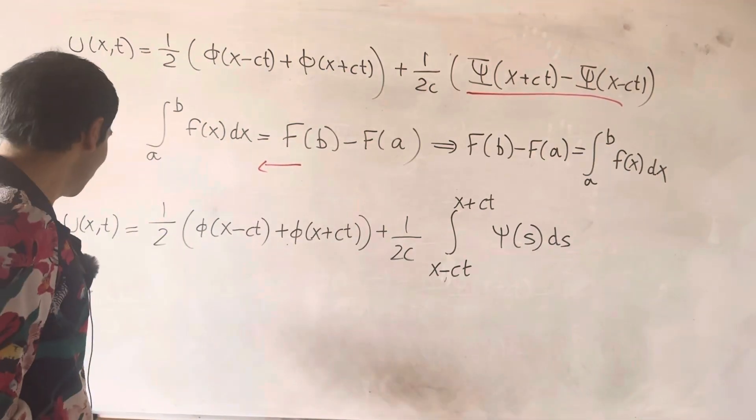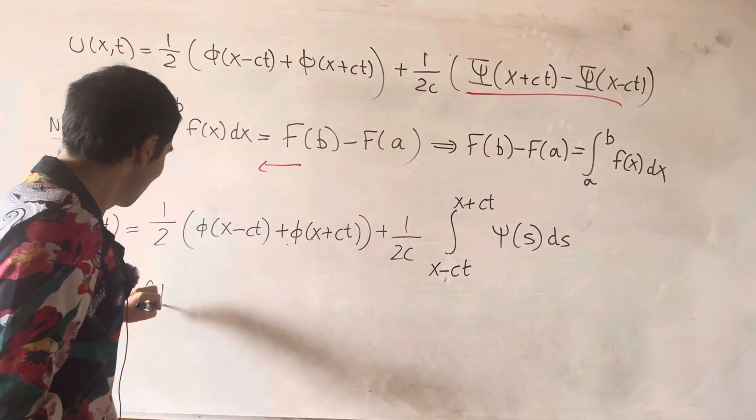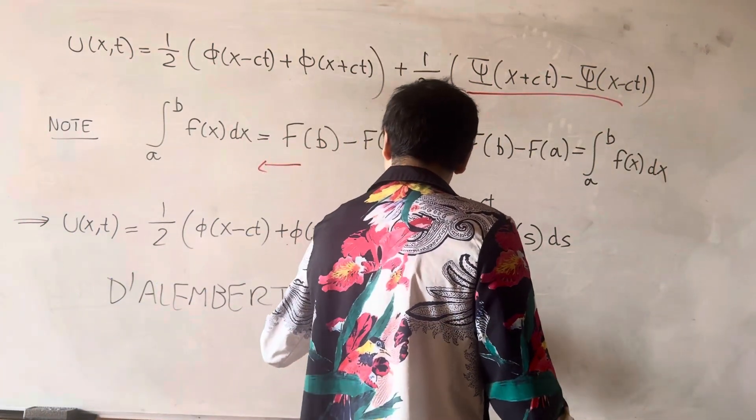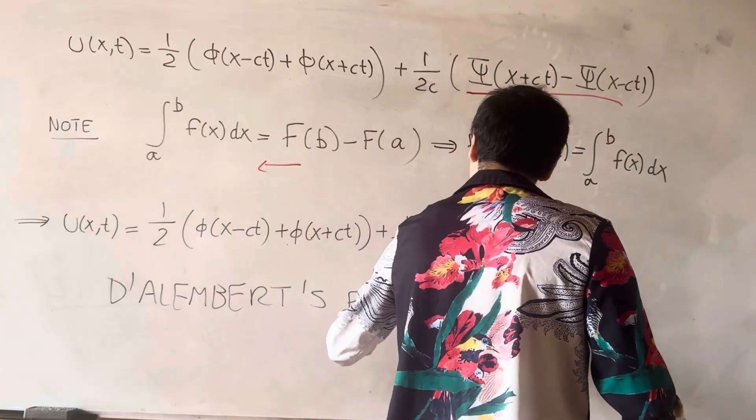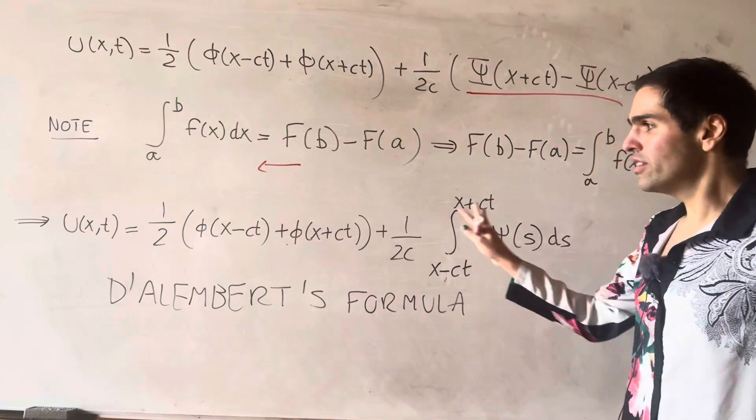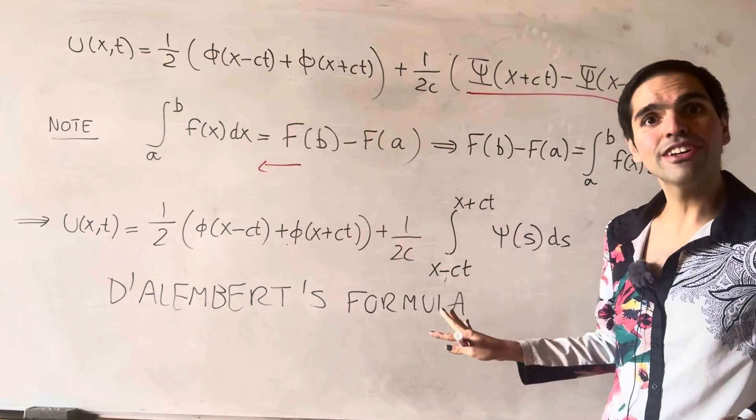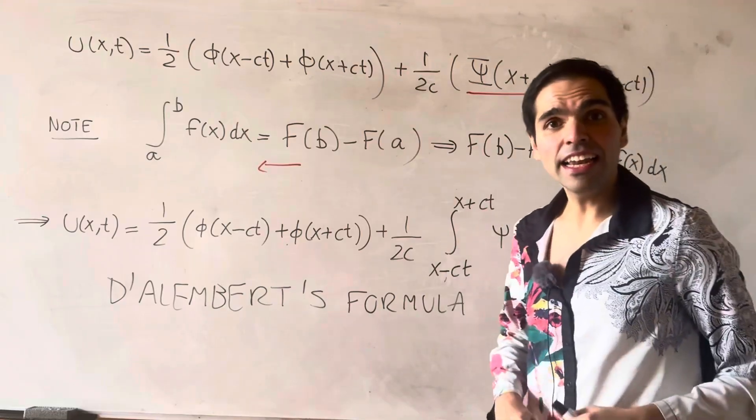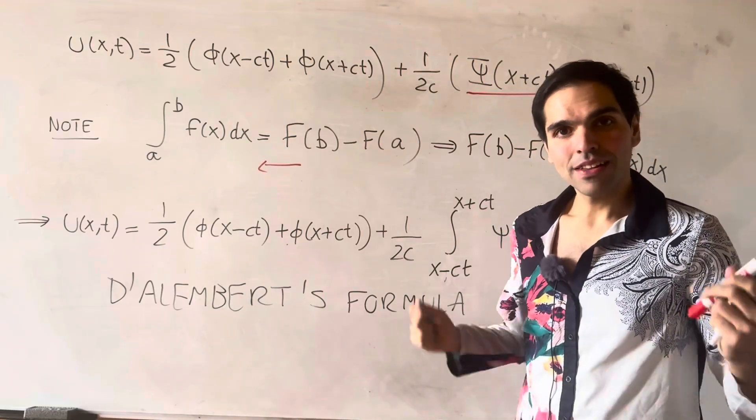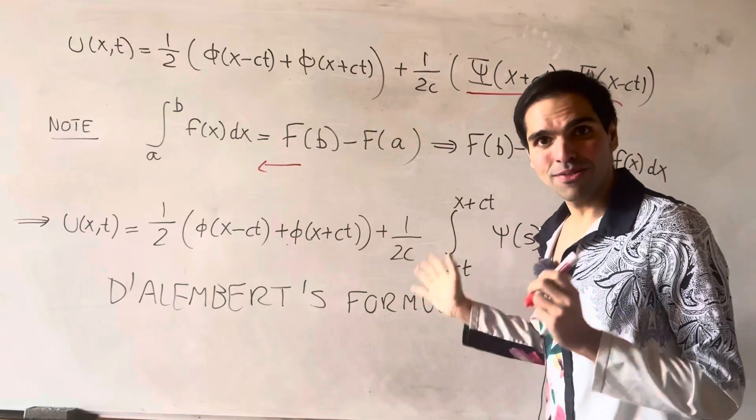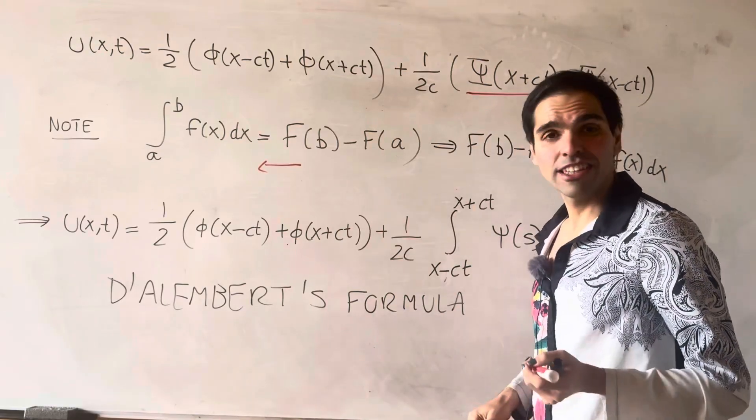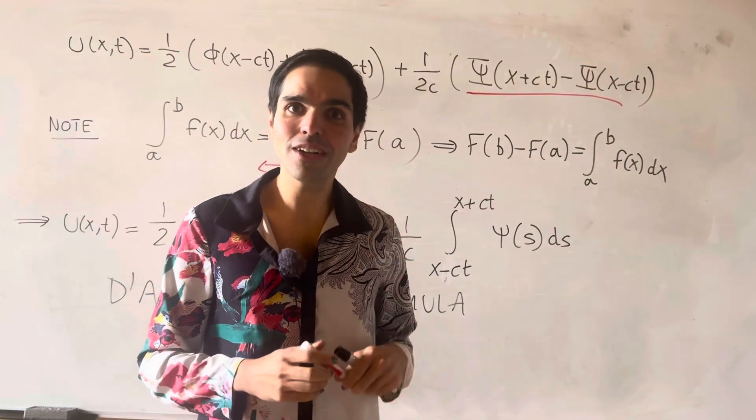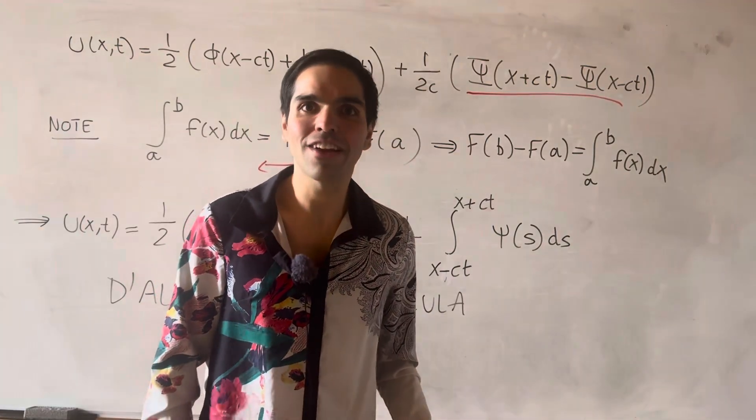So there we have it. The celebrated d'Alembert's formula, which again gives us the solution of the wave equation with initial conditions. So initial position phi and initial velocity psi. And in the next video, I'll show you some cool demos of this and interpret this in terms of our initial data. All right. I hope you liked this. If you want to see more math, please make sure to subscribe to my channel. Thank you very much.